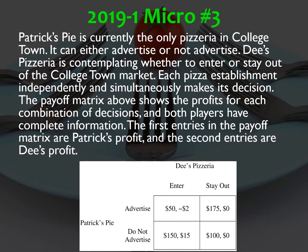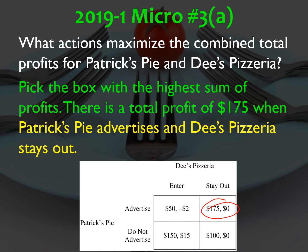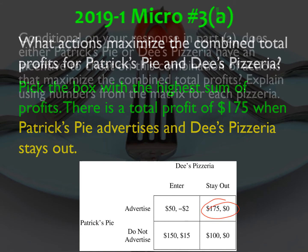Number three: Patrick's Pie is currently the only pizzeria in Collegetown. It can either advertise or not advertise. D's Pizzeria is contemplating whether to enter or stay out of the Collegetown market. Each establishment independently and simultaneously makes its decision. The payoff matrix shows profits for each combination of decisions, with the first entries being Patrick's profit and second entries being D's profit. Part A: the actions that maximize the combined total profits are Patrick's Pie advertising and D's Pizzeria staying out, with a combined total profit of $175.